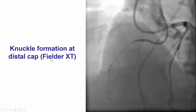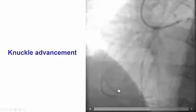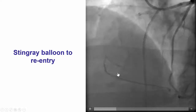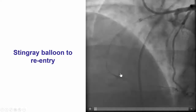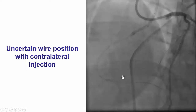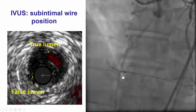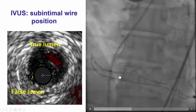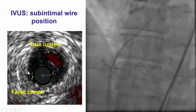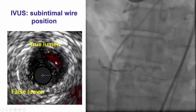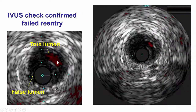We formed a knuckle with a Filder XT wire. The knuckle advanced into the posterolateral, which was our target vessel, and then we attempted re-entry using the Stingray balloon. The distal target seemed to be of good caliber. We tried the stick and swap technique. However, the wire did not seem to be in the right position. To be 100% sure, we did intravascular ultrasound, and IVUS revealed that we were actually in the false lumen, while the true lumen was still having flow but adjacent to where our wire was.